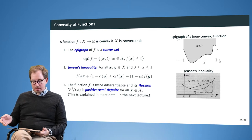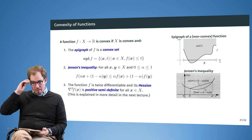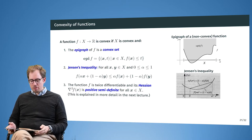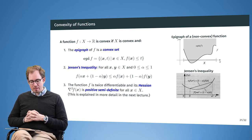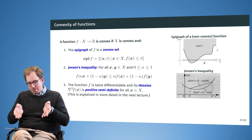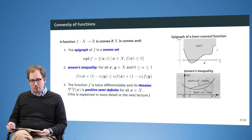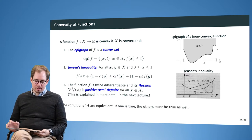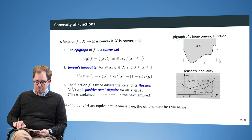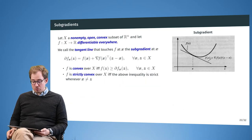Another condition involves the Hessian matrix: if the function f is twice differentiable, the Hessian matrix must be positive semi-definite. This gives a bathtub shape open at the top, which also implies convexity. All three conditions — epigraph, Jensen's inequality, and the Hessian — are equivalent: if one is true, the others must be true as well.